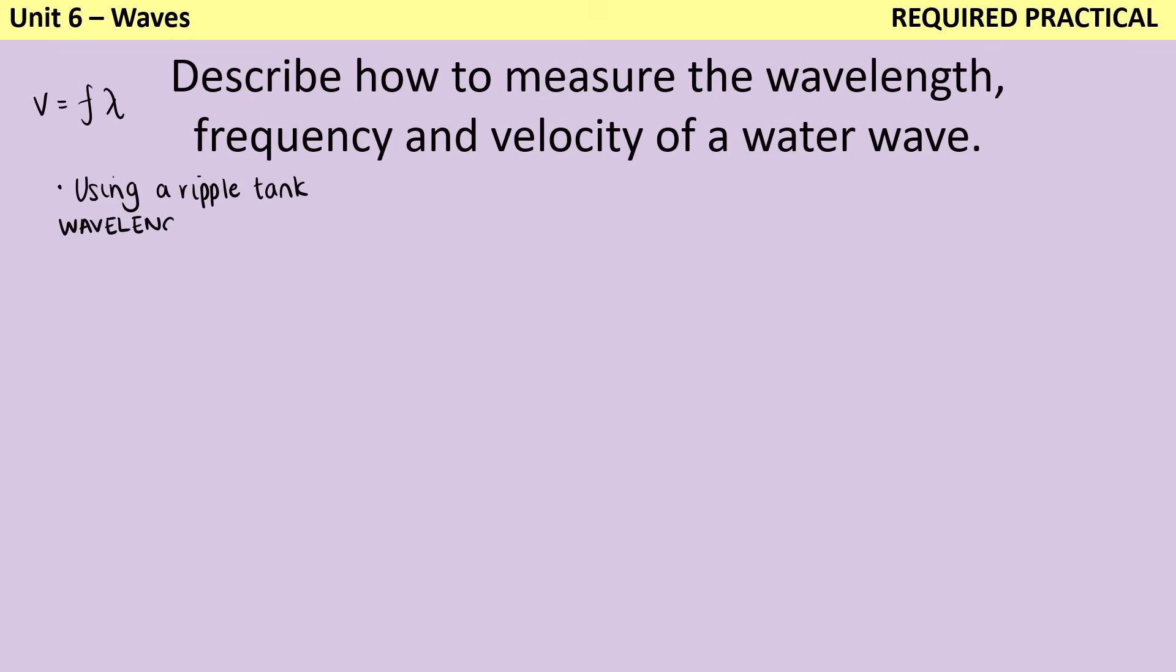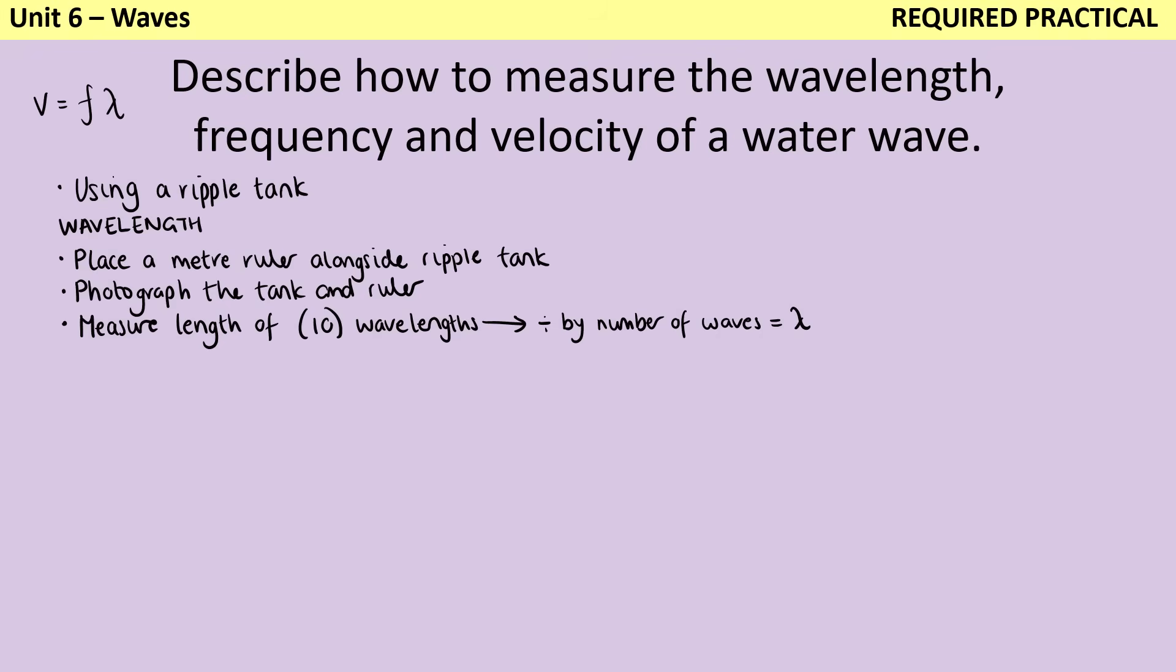So to measure the wavelength, we would place a meter ruler alongside the ripple tank, then photograph the tank and the ruler, and measure the length of a large number of waves, probably 10, and work out the wavelength by dividing that distance by the number of waves.